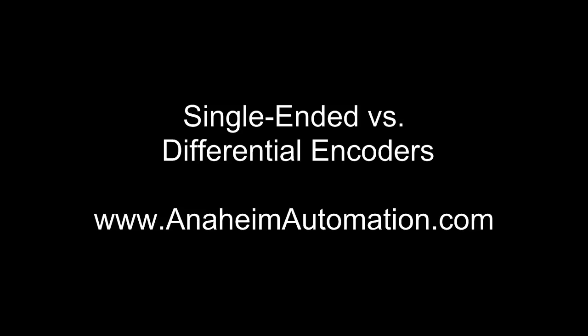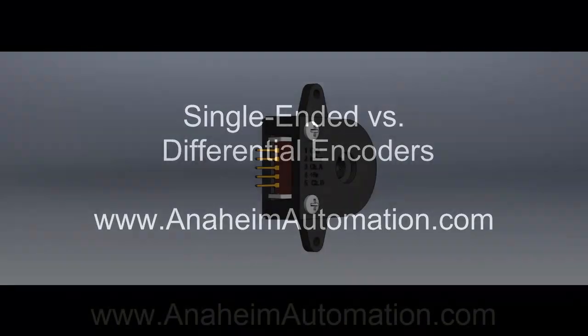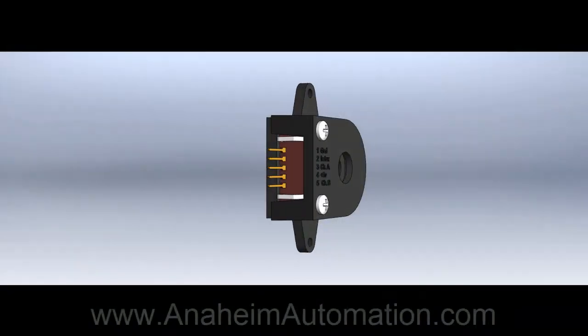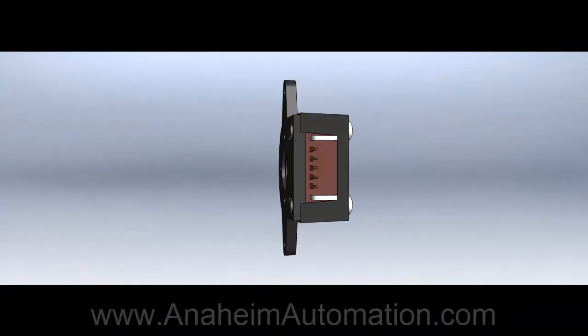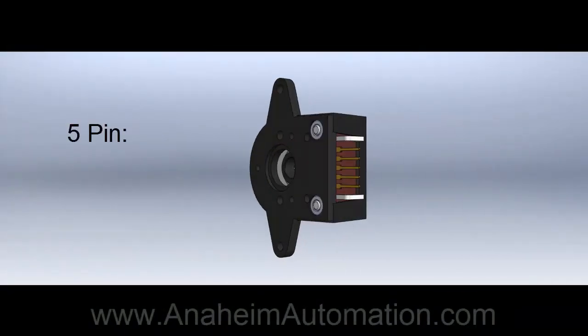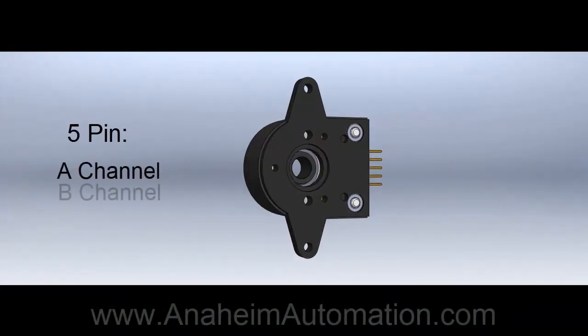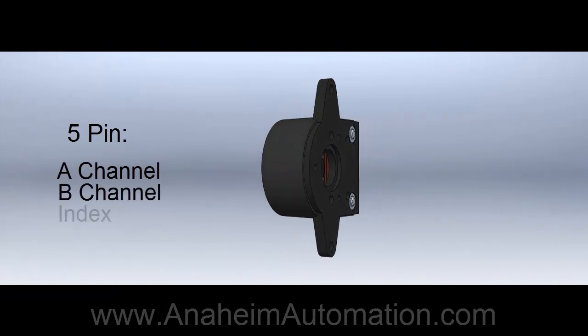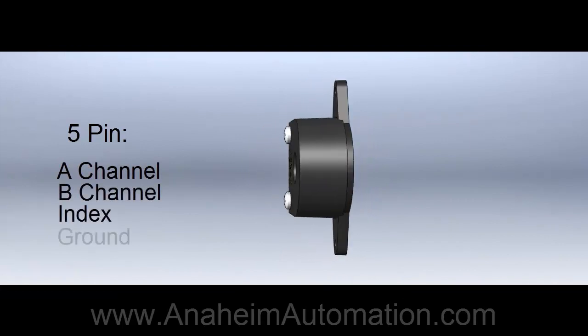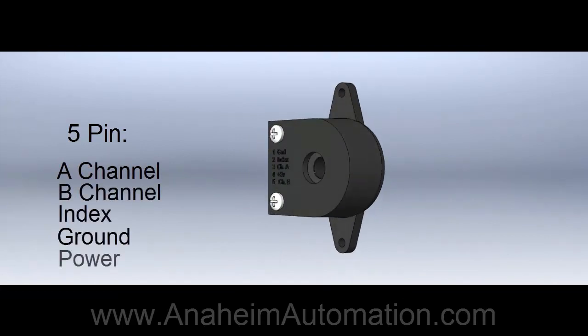This video will be discussing the difference between single-ended and differential-type encoders. Single-ended encoders come in a 5-pin standard consisting of an A-channel, B-channel, index channel, ground, and power inputs.